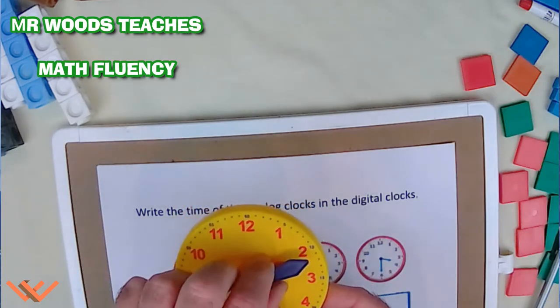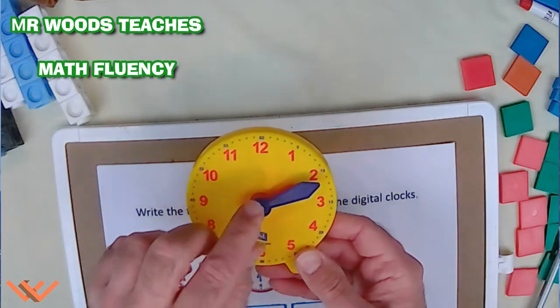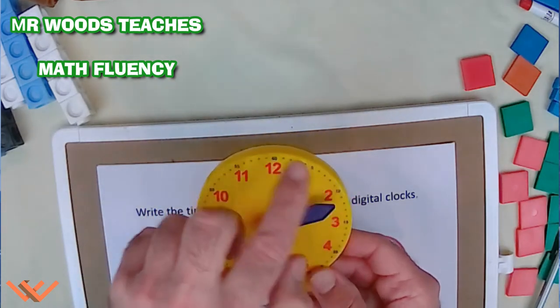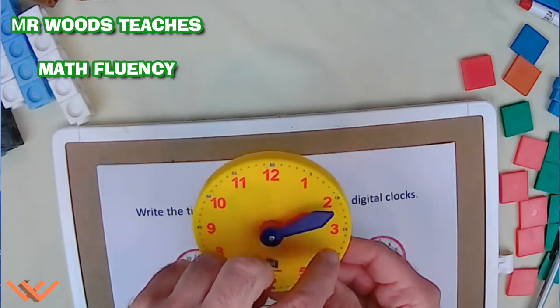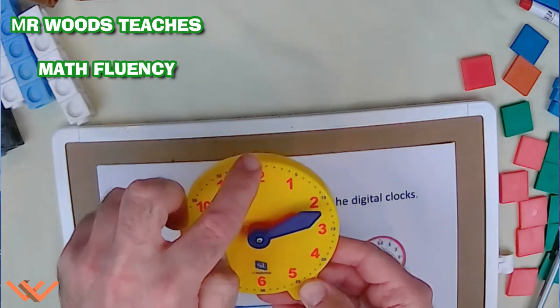So let's do a quick review of the pieces of a clock. So we have the clock face here, and it goes from 12, 1, 2, 3, 4, 5, 6, 7, 8, 9, 10, 11, 12.